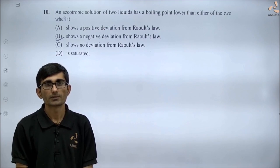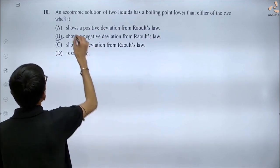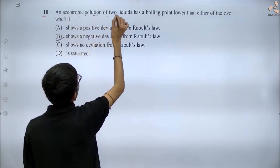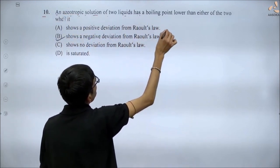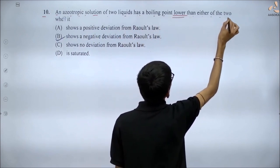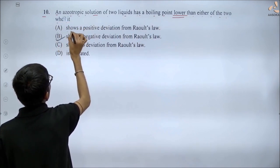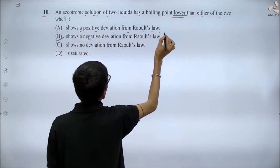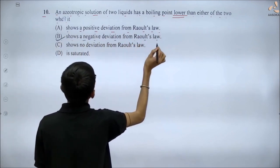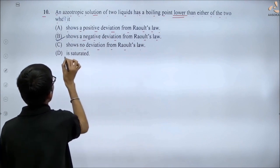Hello students, next question discuss karta hun — question number 10. An azeotropic solution of two liquids has a boiling point lower than either of the two when it: (A) shows a positive deviation from Raoult's law, (B) shows a negative deviation from Raoult's law, (C) shows no deviation from Raoult's law, (D) the part is saturated.